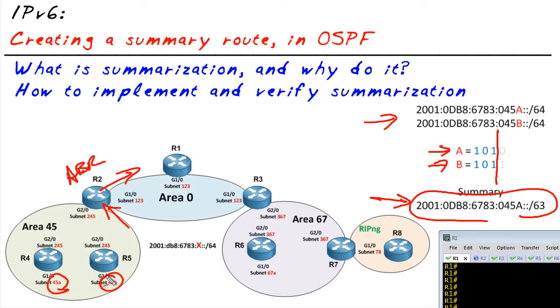Now, how do we implement it in the routing process for OSPF? We're simply going to tell R2, 'Guess what, we want you, for area 45, to use this summary address.' Press enter, and it's done. R2 will now start advertising the summary, suppressing the more detailed routes.